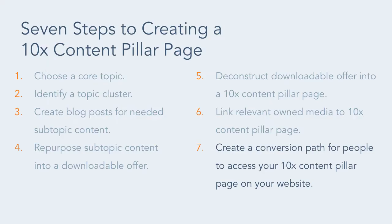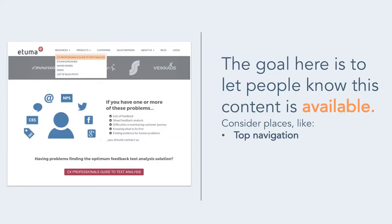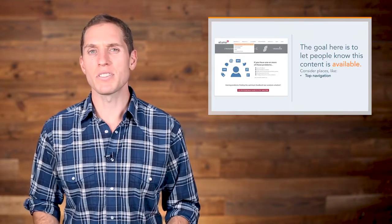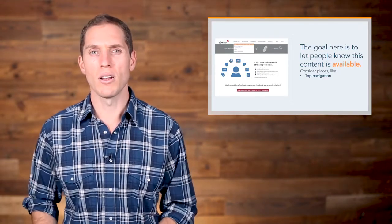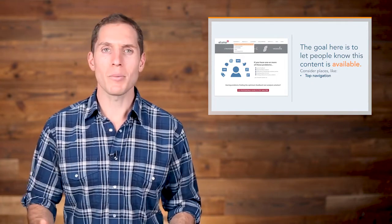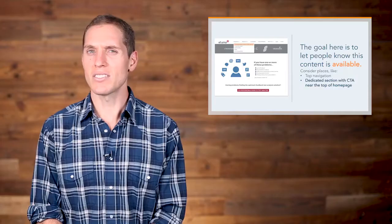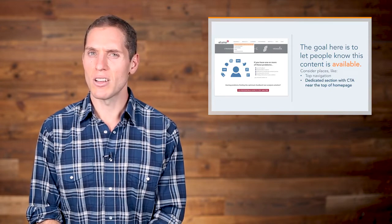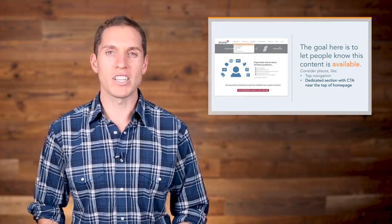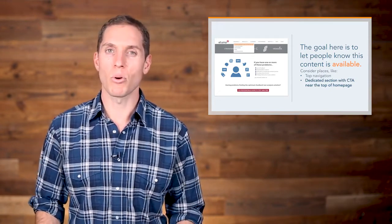Seventh, Etuma created a conversion path for people to access their 10x content pillar page. The goal is to let people know this content is available, because if you don't, you run the risk of a large portion of your website visitors never finding it. Forgetting this step would be similar to building a new addition on your house without a door — no matter how great that room is, no one will be able to get in. Another placement to consider is a dedicated section with a CTA near the top of the homepage with an image and descriptive supplemental text. This doesn't mean it always needs to stay there — you can promote the pillar page for a limited time, possibly two weeks or a month, to support its publishing launch.